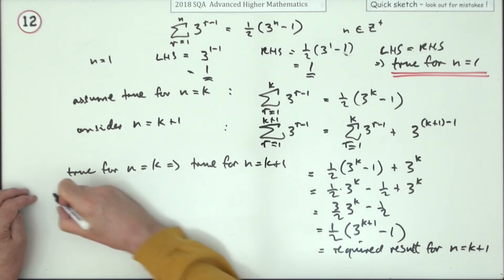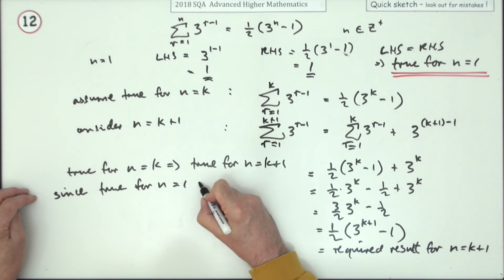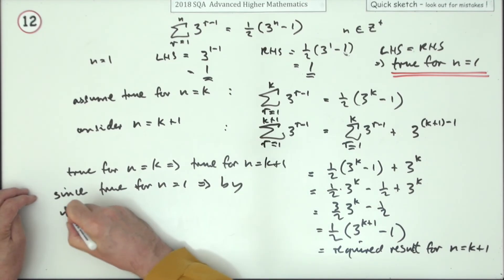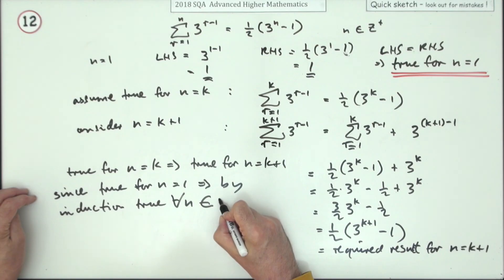But since it's true for n equals 1, that means by induction it's true for all n that you were considering, which were the natural numbers or Z+ positive integers.